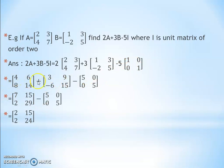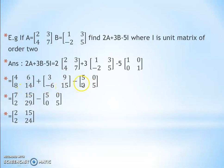Now take the addition of the first two matrices first: 4+3=7, 6+9=15, 8+(-6)=2, 14+15=29. So we get [7, 15; 2, 29]. Then subtract 5I = [5, 0; 0, 5], giving [7, 15; 2, 29] minus [5, 0; 0, 5].